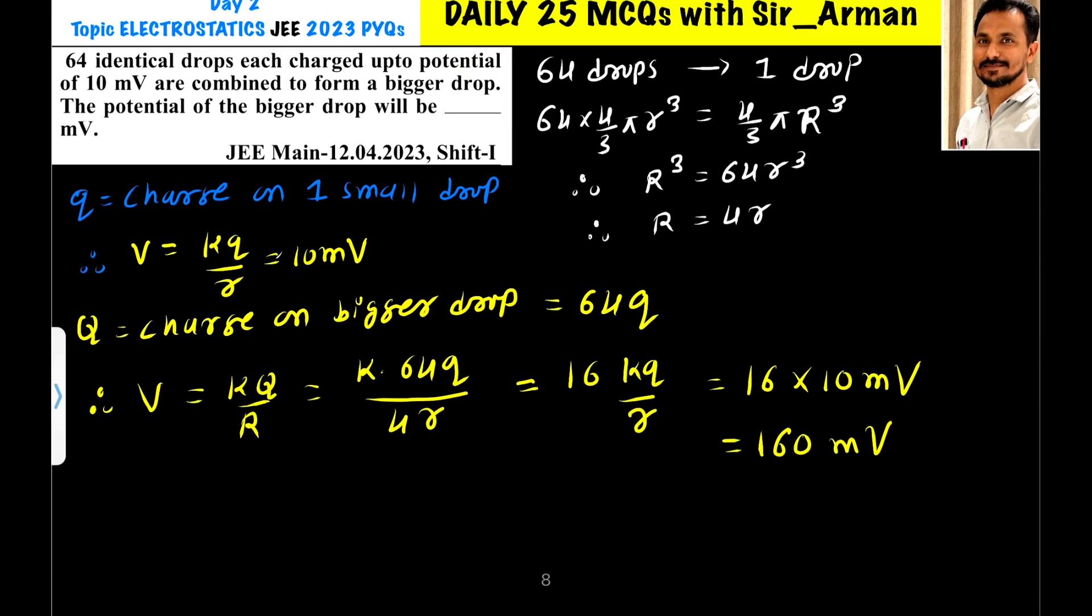64 identical drops, each charged to a potential of 10 millivolt, are combined to form a bigger drop. The potential of the bigger drop will be: We have 64 drops that combine to form one drop. Now from volume conservation...